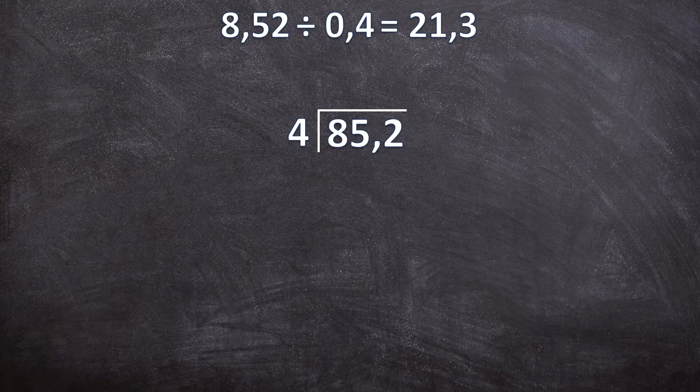Before we start with the four steps for normal long division, we are still dividing a decimal number by a whole number, so we have two extra steps. First, we write the comma in the answer — it goes exactly above the comma in the dividend. Now that we have our comma in the answer, we can go ahead and ignore the comma in the dividend.